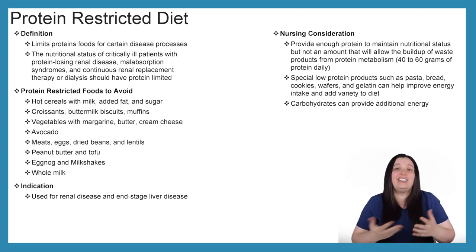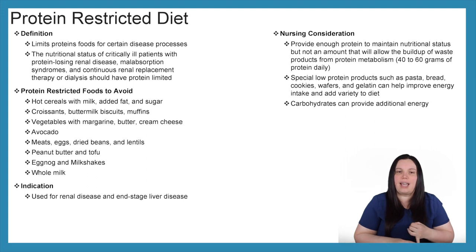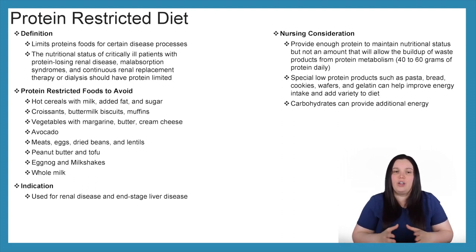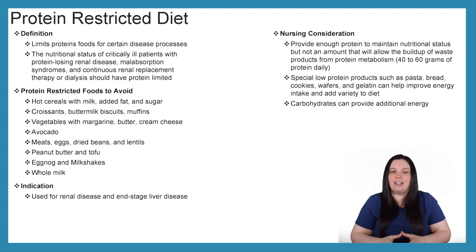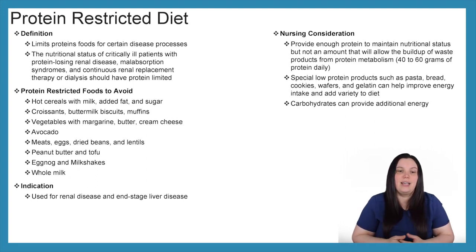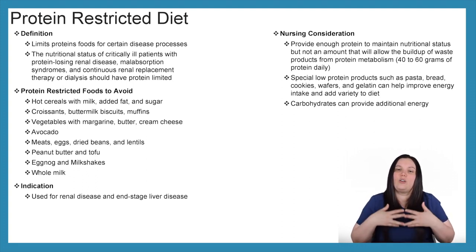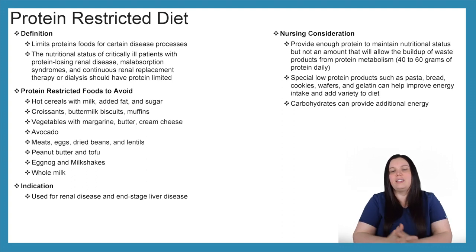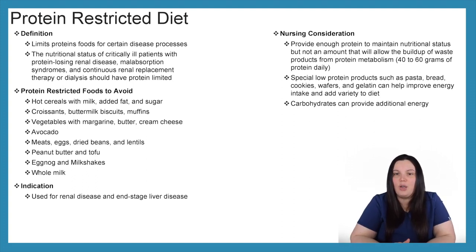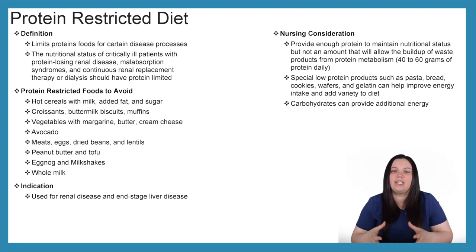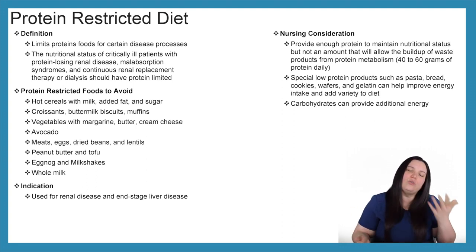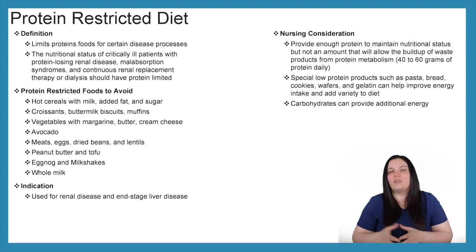Protein-restricted foods to avoid include hot cereals with milk, croissants, buttermilk biscuits, muffins, vegetables with margarine, butter or cream cheese, avocados, meats, eggs, dried beans, lentils, peanut butter, tofu, eggnog, milkshakes, and whole milk. Nursing considerations include providing enough protein to maintain nutritional status without allowing buildup of waste products from protein metabolism — usually 40 to 60 grams of protein daily.